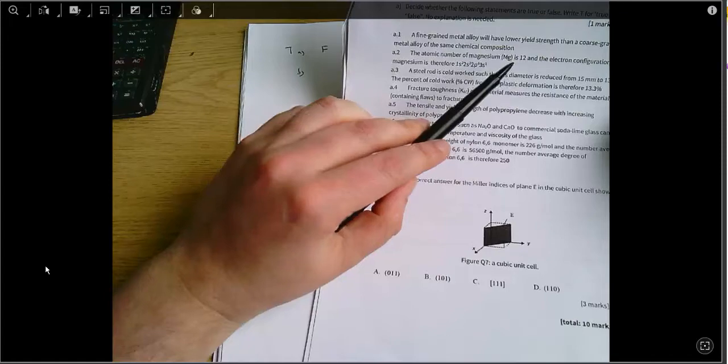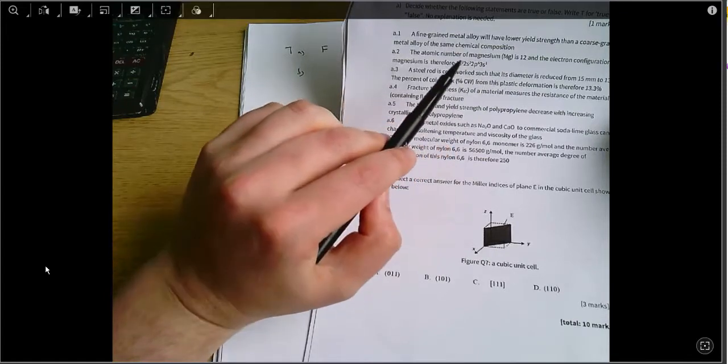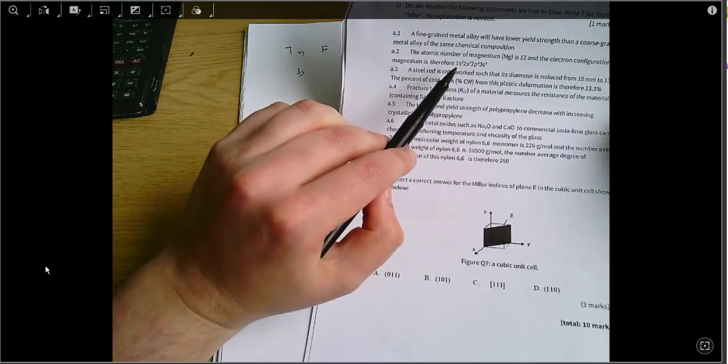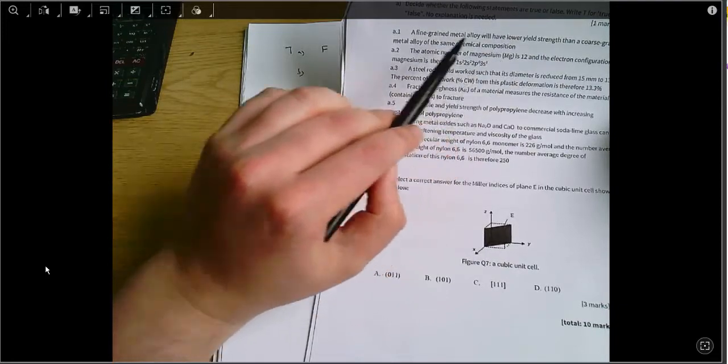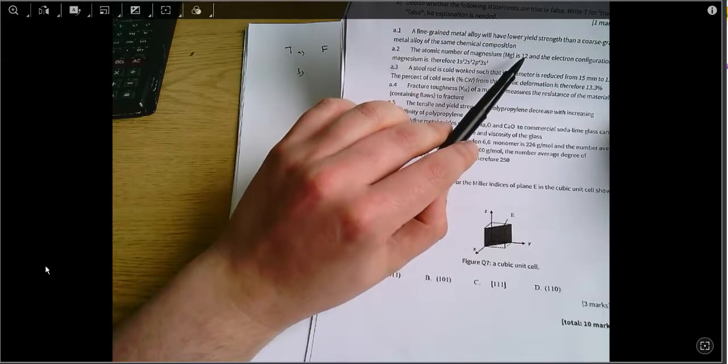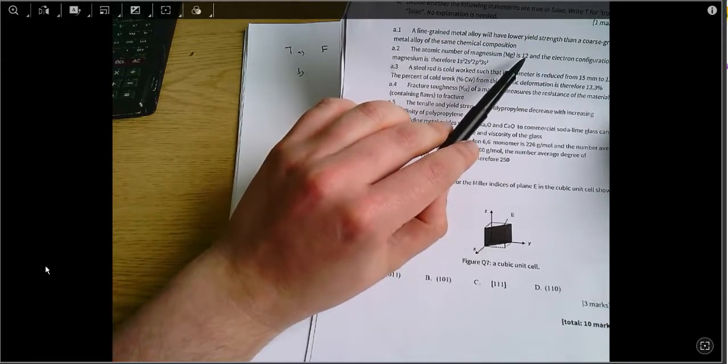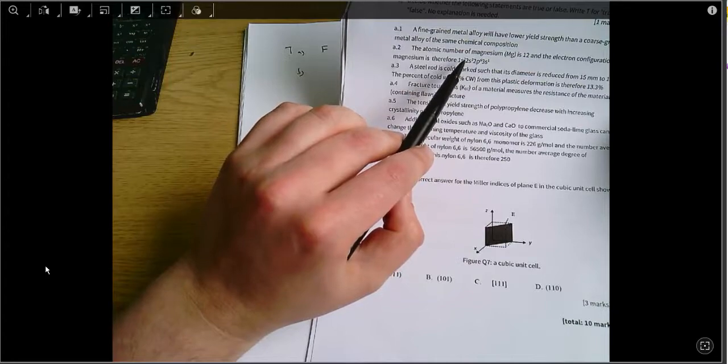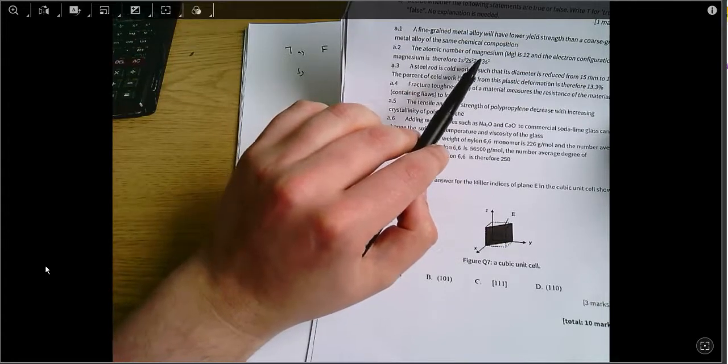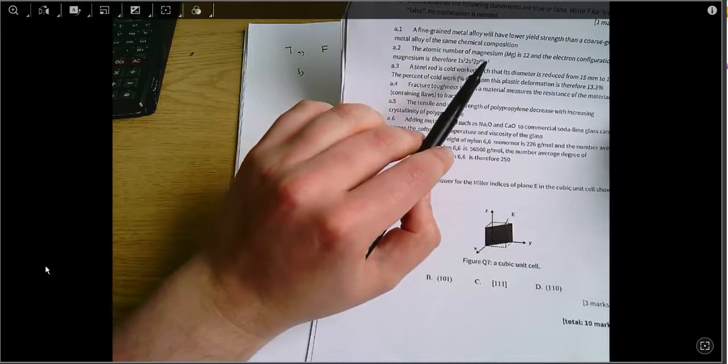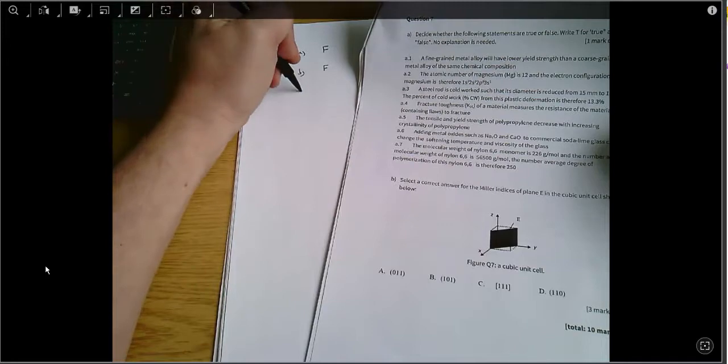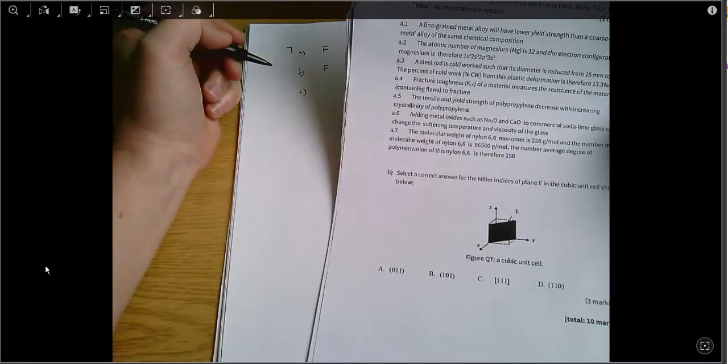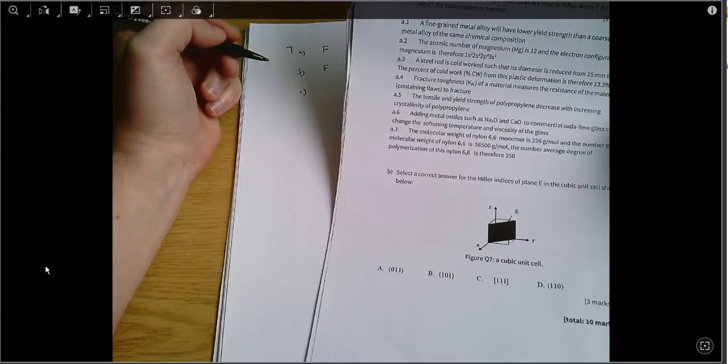In part B the atomic number of magnesium is 12. This looks like kind of a complicated question because we've got to work out exactly what orbitals these electrons should be in. But actually we know that there ought to be 12 electrons if the atomic number of something is 12, and in fact there are these superscript numbers here: 2 plus 2 plus 6 plus 1 which is only 11 electrons so that is false. The number of electrons doesn't match the atomic number so it can't be true.